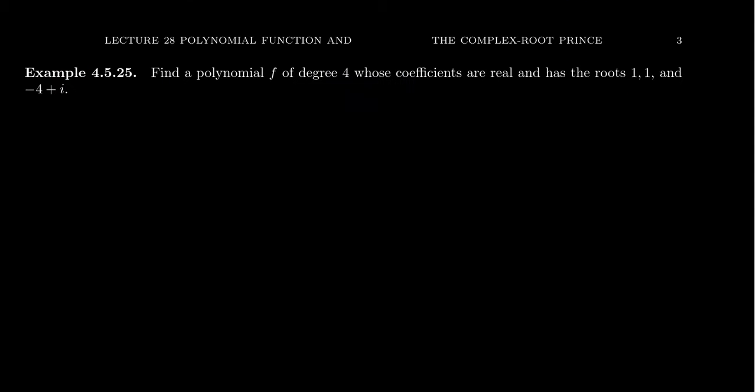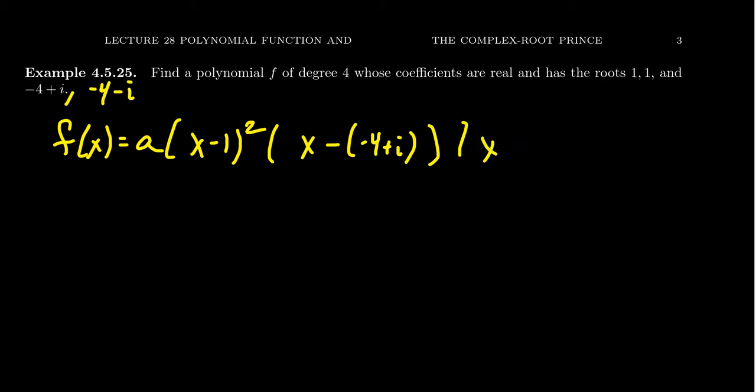As another example, suppose we want to find a polynomial of degree 4 whose coefficients are, again, real. And we want the roots to be 1, 1, and negative 4 plus i. So there's a repeated root. So what can we say about our polynomial? We don't have enough information for its leading coefficients, so we'll just say it's a for the moment. And because 1 is a repeated root, we're going to get x minus 1 squared. We're going to get x minus negative 4 plus i. But then the other root has to be the conjugate, which is negative 4 minus i. So then the other one's going to be x minus negative 4 minus i.